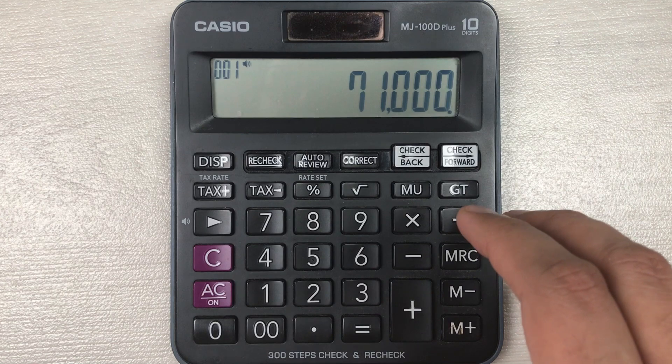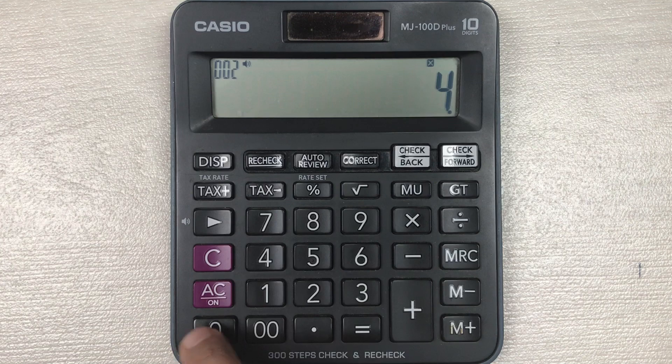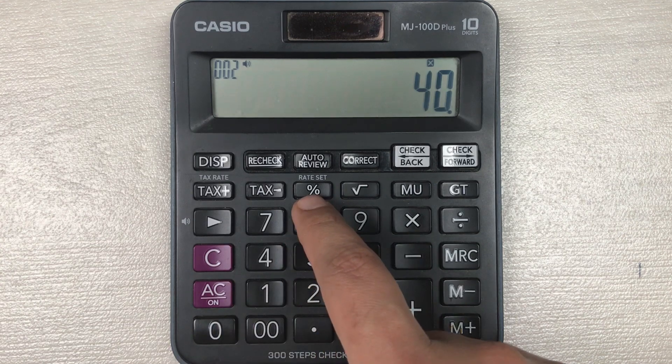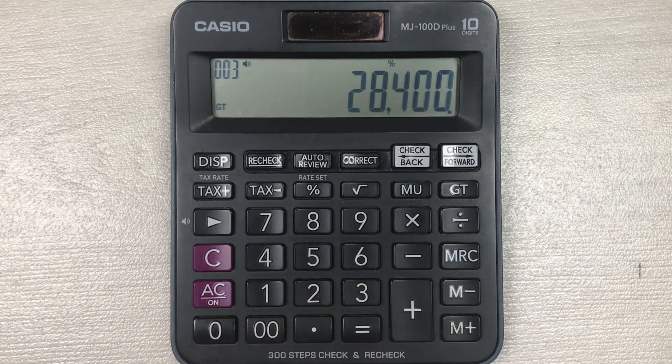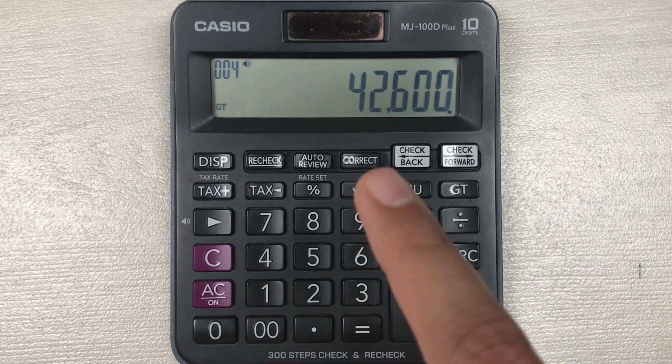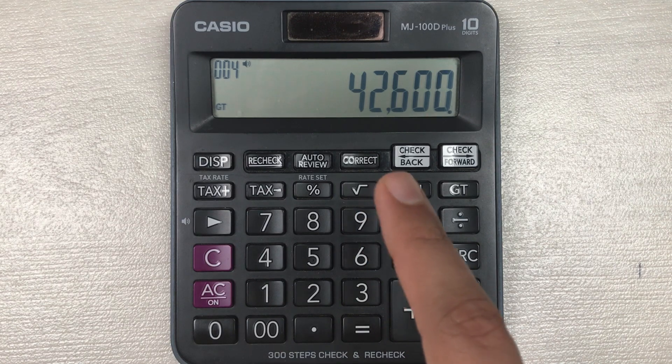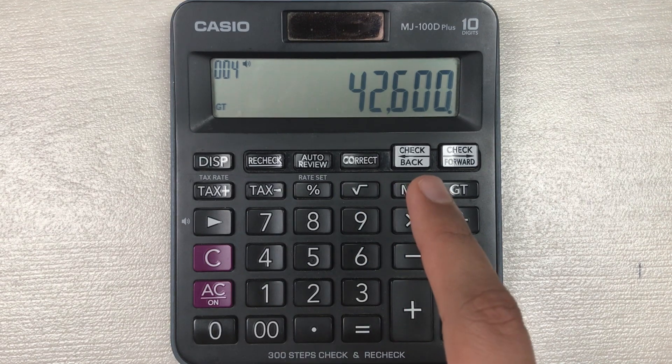So you multiply it with 40, then you press this percentage button, and then you press this minus button. So here is your final answer: 42,600 is the final price after 40 percent off.